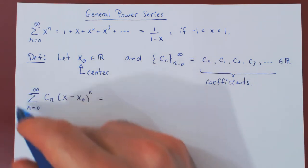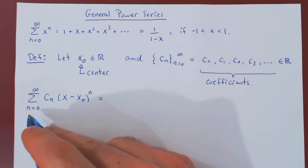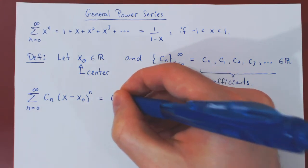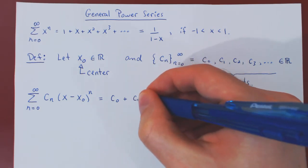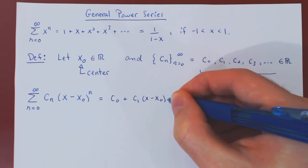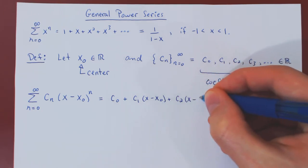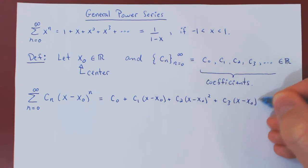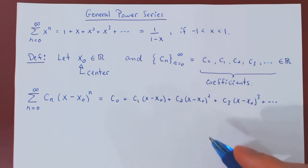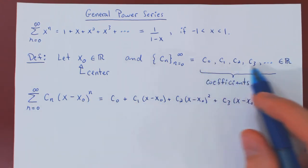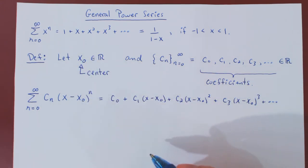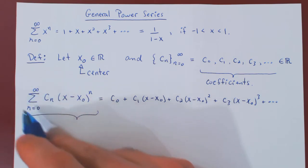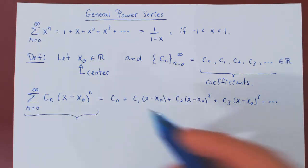We can expand the series by writing out the first few terms. When n is 0, we get c0 — since x minus x0 to the 0 is 1 — giving us the constant term c0. Plus, when n is 1: c1 times x minus x0. Plus when n is 2: c2 times x minus x0 squared. Plus when n is 3: c3 times x minus x0 cubed, and so forth. This is the expanded form, while the sigma notation gives the compact form.